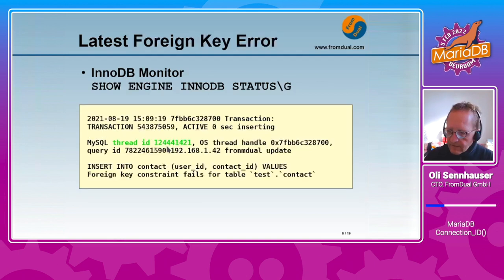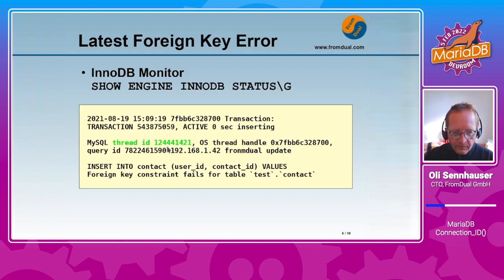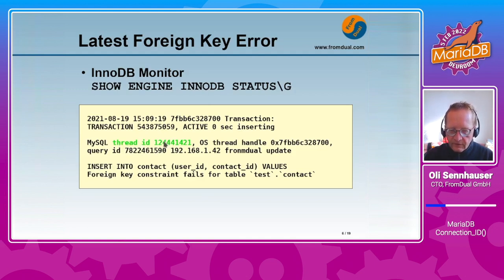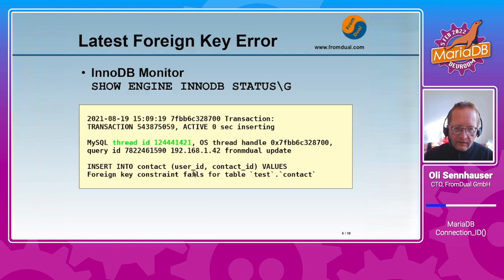Again in the InnoDB monitor in SHOW ENGINE INNODB STATUS, there is another section called latest foreign key error, and here you see the connection ID again. It's called thread ID again, and you can see which connection caused the foreign key error with that command.